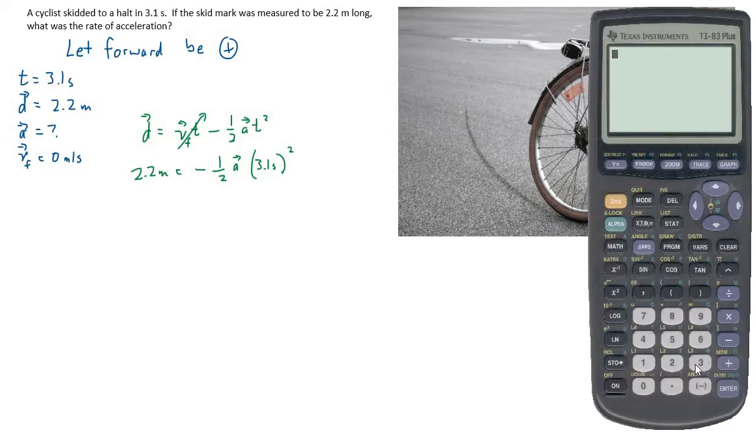So if we start by squaring 3.1, then we get 9.61. So 2.2 meters equals negative one-half acceleration times 9.61. I can now divide both sides by 9.61 and also multiply by 2 to get rid of that one-half. So I'll be doing 2.2 divided by my answer there.